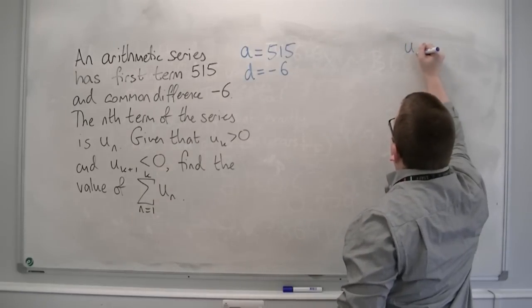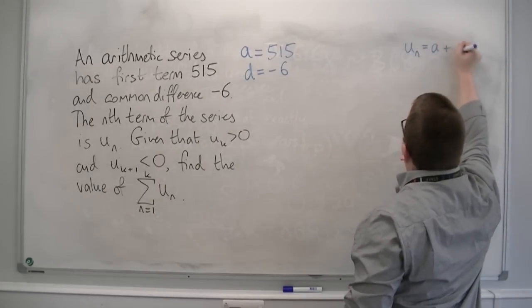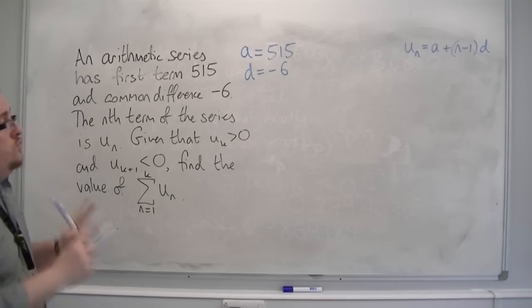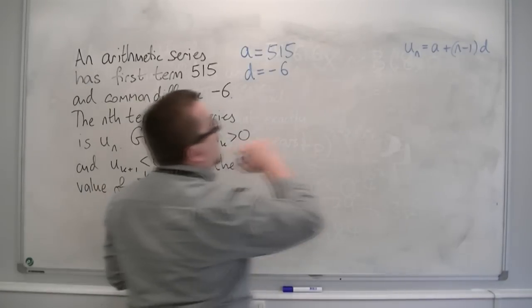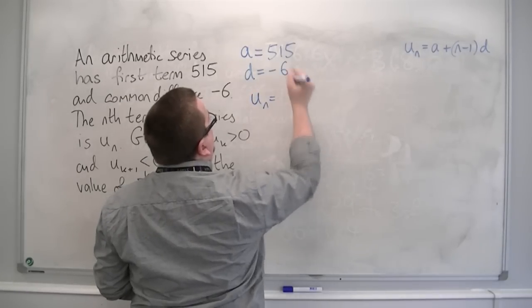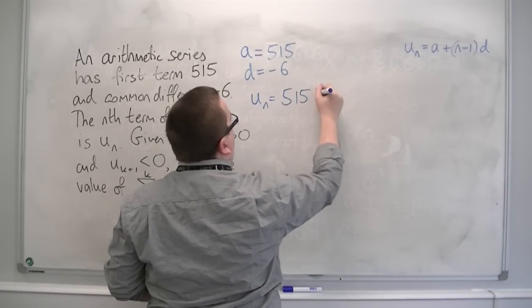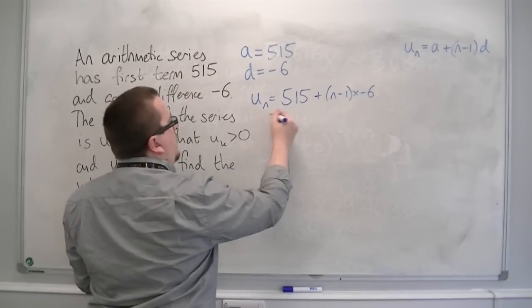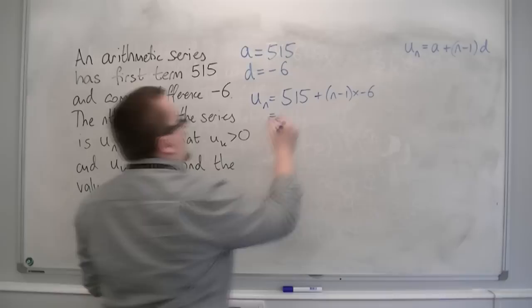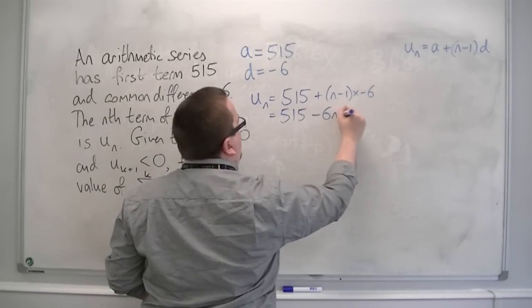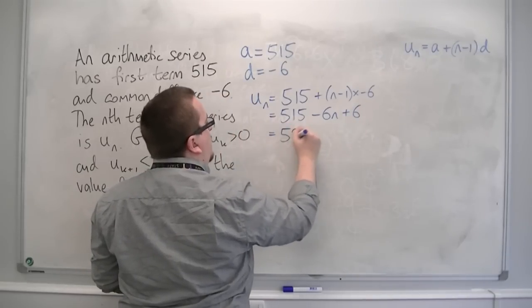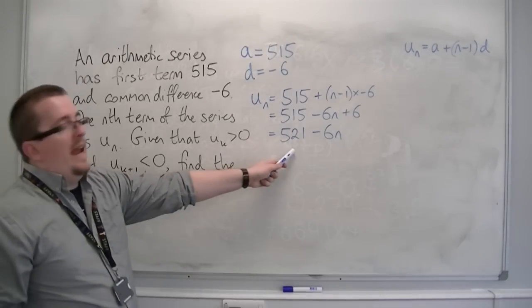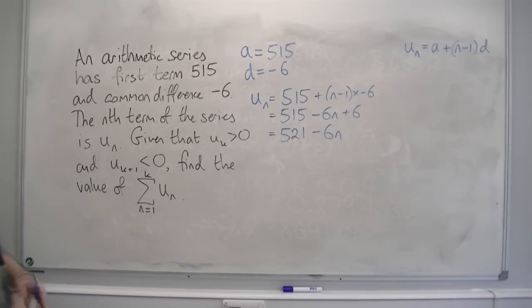We have two formulas. u_n = a + (n-1)d. That's the nth term of this series. So we've got u_n = 515 + (n-1)(-6). If we simplify this, we get 515 - 6n + 6, so we've got 521 - 6n. So this is the nth term of the series, which I'm going to want to use.